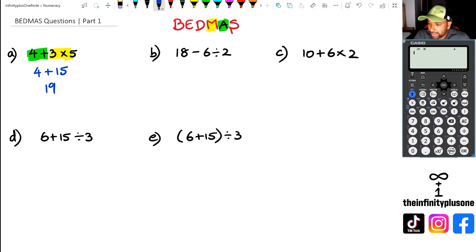Now having a look at the calculator, if we were to go 4 plus 3 times 5, that's going to give us 19 as well.